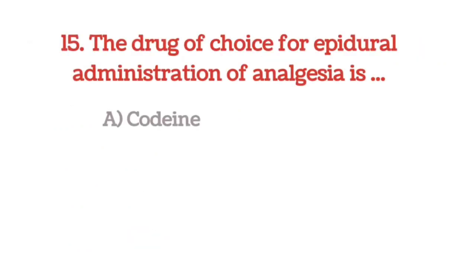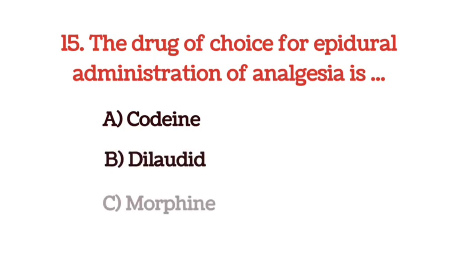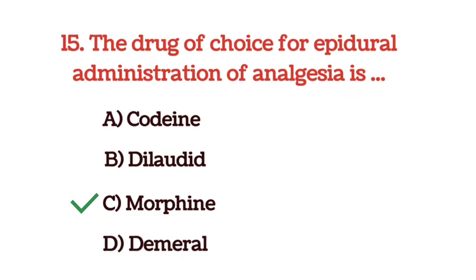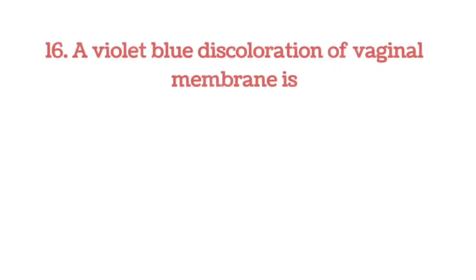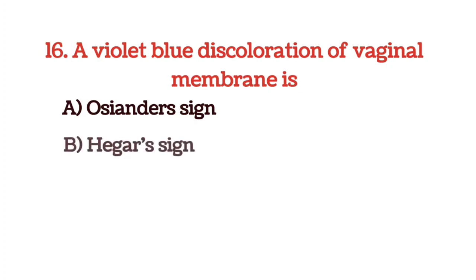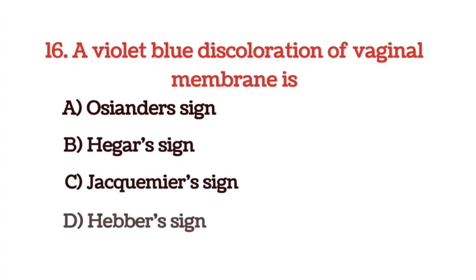The drug of choice for epidural administration of analgesia is — options are codeine, dilaudid, morphine, and Demerol. The answer is option C, morphine — it is the drug of choice. Next question: a violet-blue discoloration of vaginal membrane is — options are Osiander sign, Hegar sign, Jacquemier sign, and Heber sign. The answer is option C, Jacquemier sign.